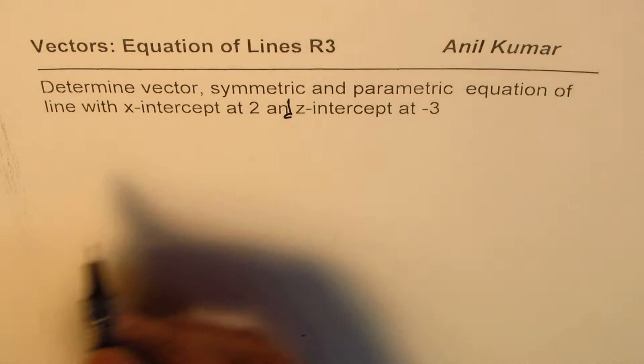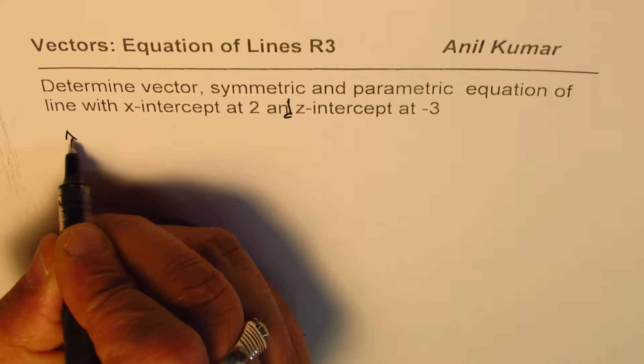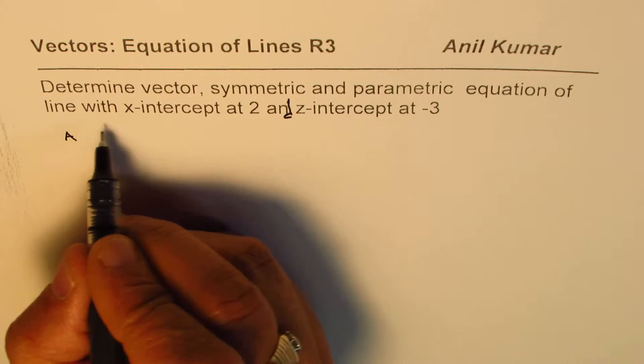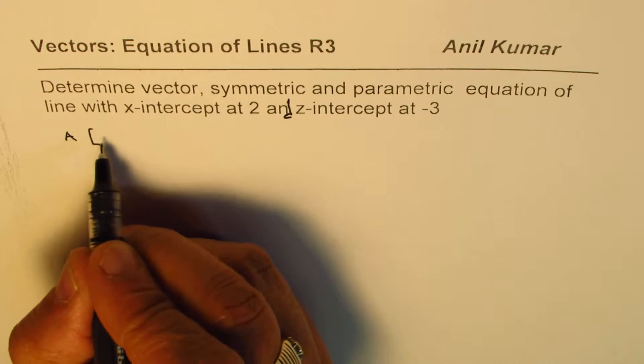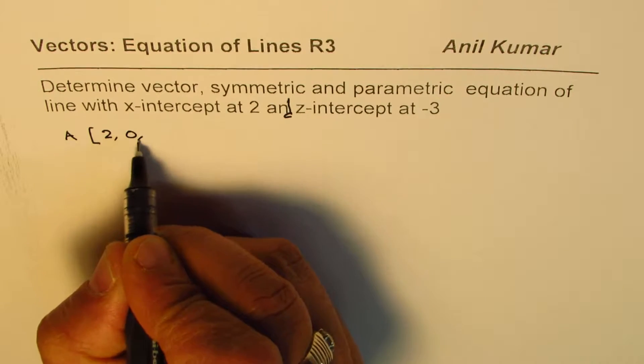When I say x-intercept, let me call this point as A. The position vector will be x-intercept is 2. It is (2, 0, 0).